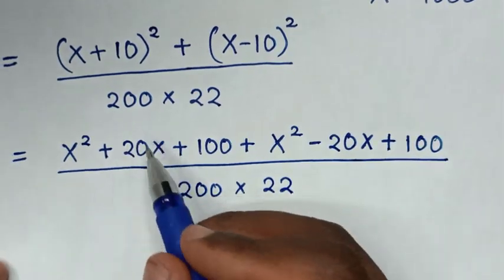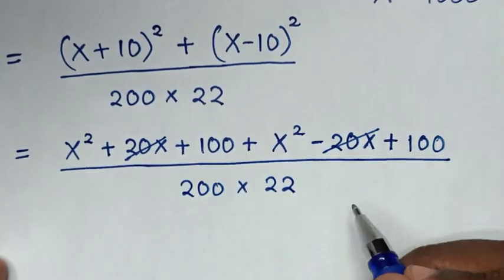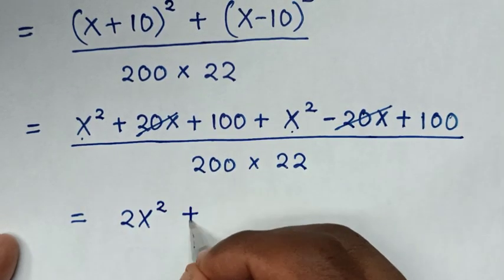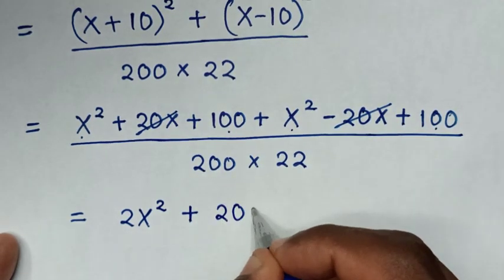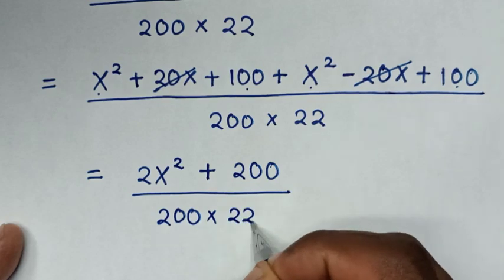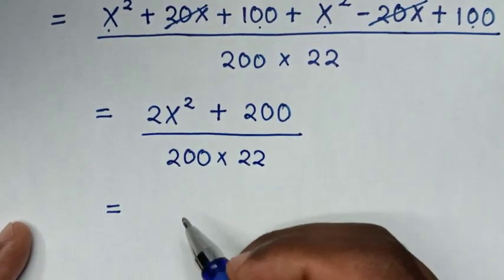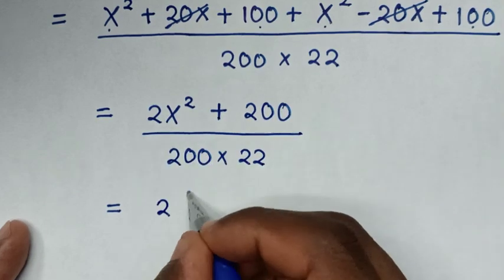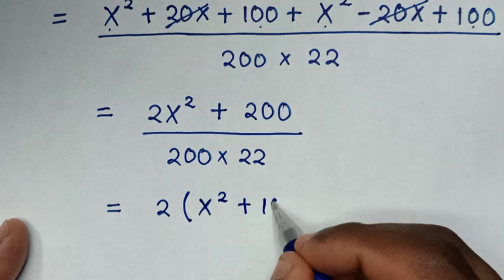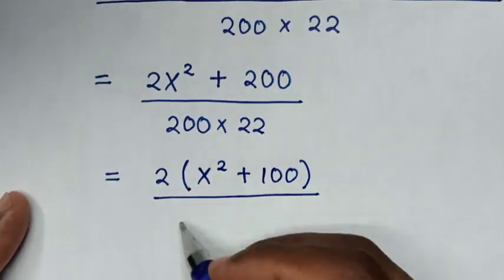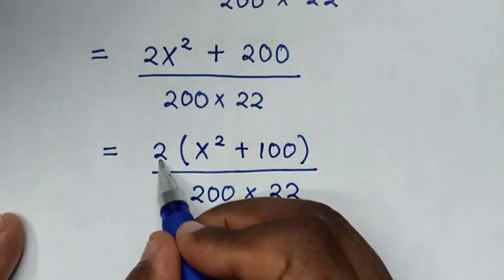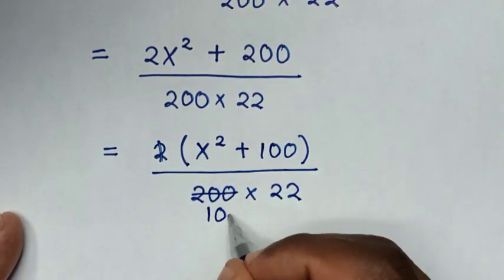From here, 20x minus 20x is 0, so these terms will cancel. It will be equal to: x square plus x square is 2x square, then plus 100 plus 100 is 200, then over 200 times 22. To simplify, this 2 will cancel, giving 100.